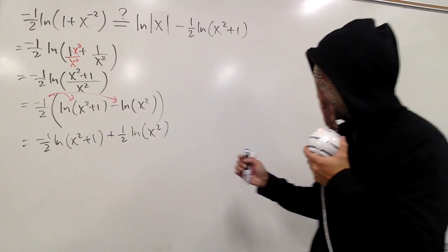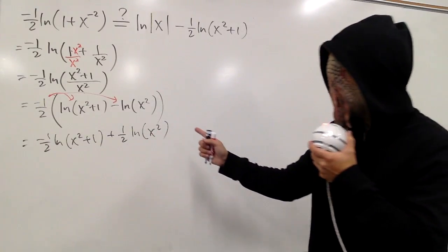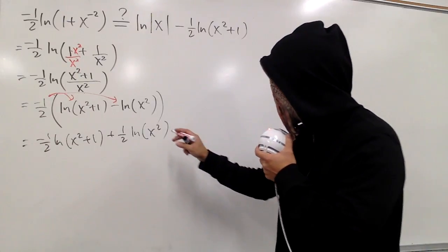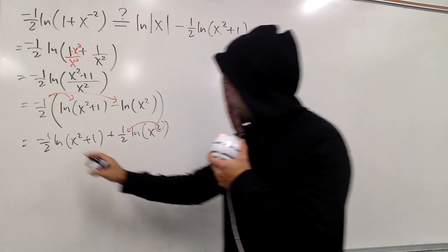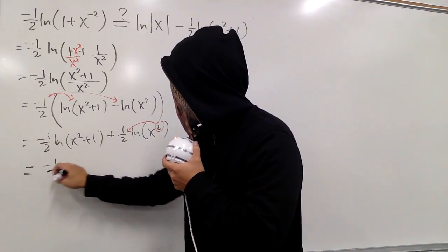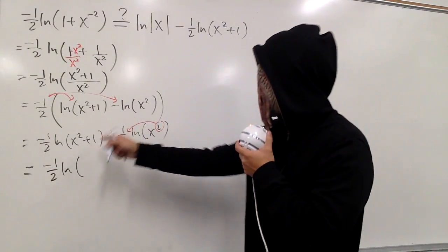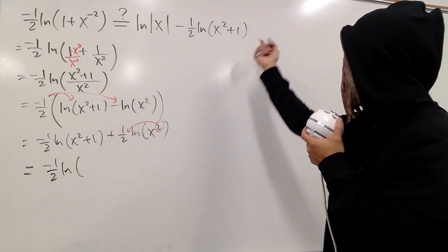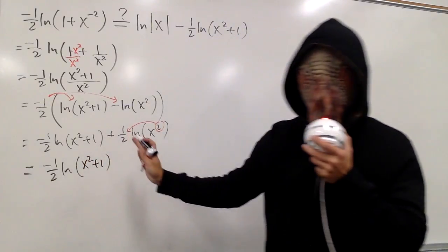And now, this is ln x squared. What can we do with this power 2? We know we can take this to the front, isn't it? Like that. Okay, so, let me just put this down right here. This is negative 1 half natural log of, and if you want to seriously show that it's the same as, well, it's the same actually, x squared plus 1. Just put it down like this.